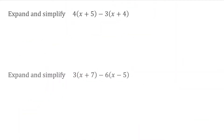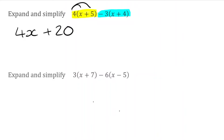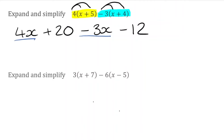For our next question, the first bracket is 4(X+5) and the second bracket has a negative: negative 3(X+4). Expanding: 4 times X is 4X, and 4 times positive 5 is positive 20. Then negative 3 times X is negative 3X, and negative 3 times positive 4 is negative 12. Collecting like terms: 4X take away 3X is just X, and 20 take away 12 is positive 8. So our final expression is X plus 8.